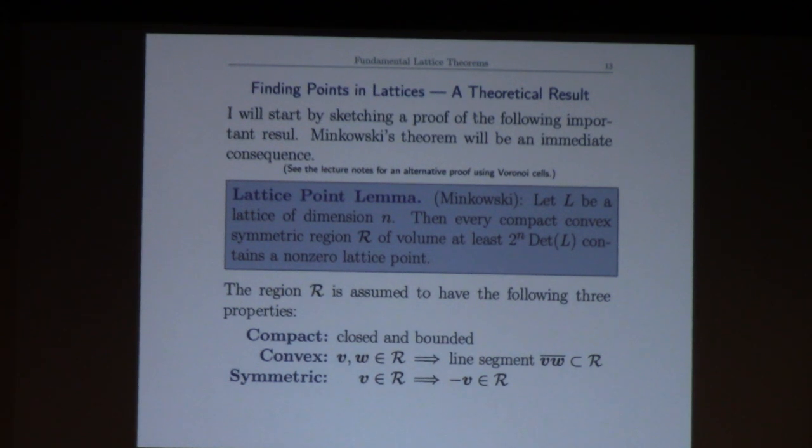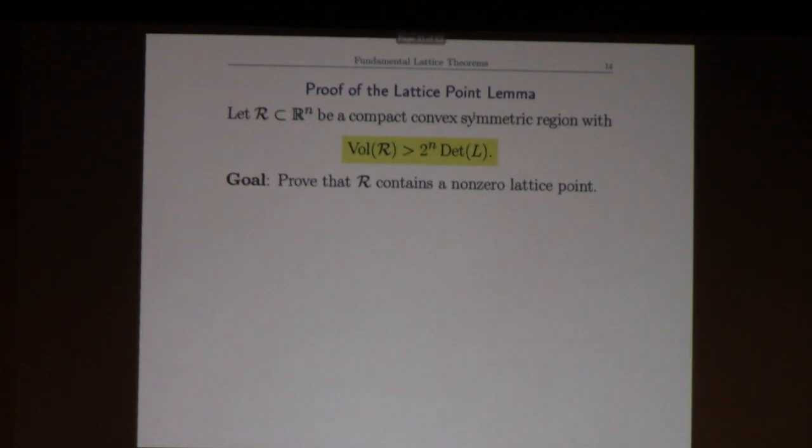Just to reiterate: compact is closed and bounded, convex means any two points in the region the line segment's in the region, and symmetric means it's symmetric about the origin - vector in the region then minus vector's in the region. We're also assuming that its volume is at least two to the n times the volume of a fundamental domain of the lattice. Our goal is to create a non-zero lattice point, which tends to be hard to create.